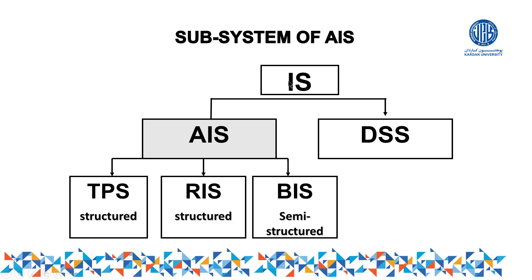At the top we have IS, which means Information System. The information system for accounting is divided into two parts: the first part is AIS and the second part is DSS — Decision Support System. For management, AIS is also divided into two parts: MIS and DSS. Similarly, in accounting, the information system is divided into AIS and DSS.